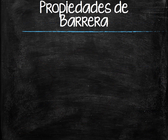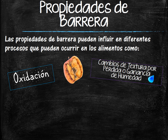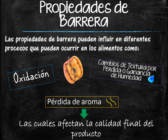Barrier properties. Barrier properties can influence different processes that occur in food products, such as oxidation, texture changes due to loss of moisture gain, loss of aromas, etc., which affect the product's final quality.